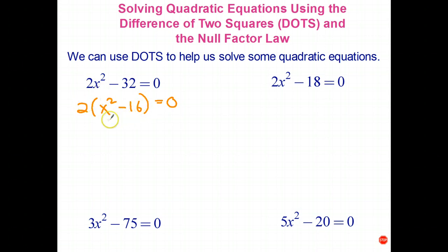So now I've got a squared minus b squared. That factorizes into a plus b times a take b equals 0. So now I have three factors equaling 0. So I could say, well, x plus 4 equals 0. Or x minus 4 equals 0.